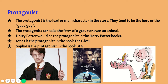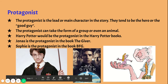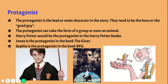In the exposition we meet the characters, and there are two main characters you see throughout the story. The first is the protagonist — the lead or main character, who usually tends to be the hero or the good guy. The protagonist doesn't always have to be a person; they can take the form of a group or even an animal. In Harry Potter, Harry Potter is the protagonist. In The Giver, Jonas is the protagonist. And Sophie is the protagonist in the book BFG.